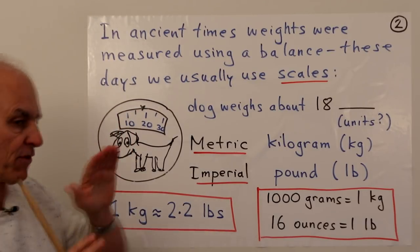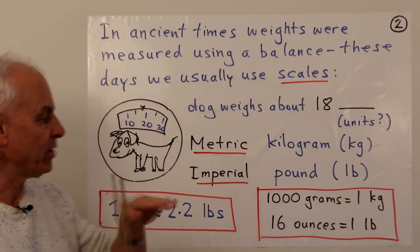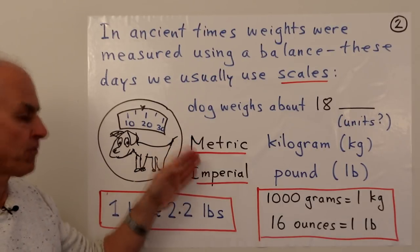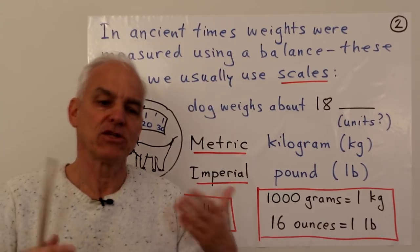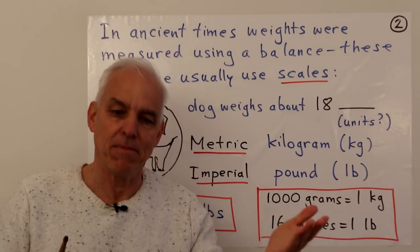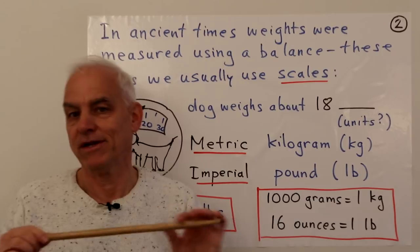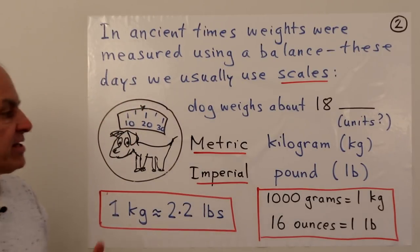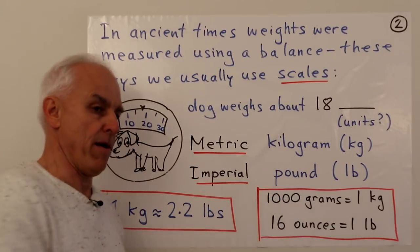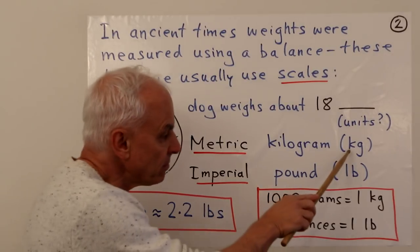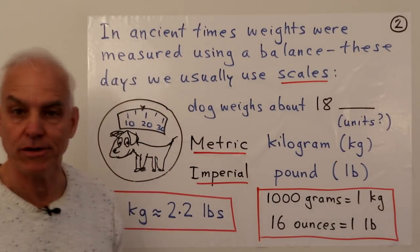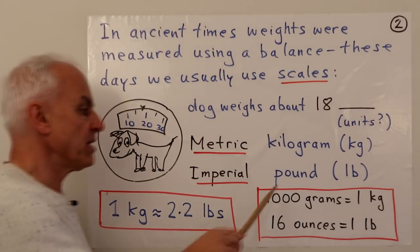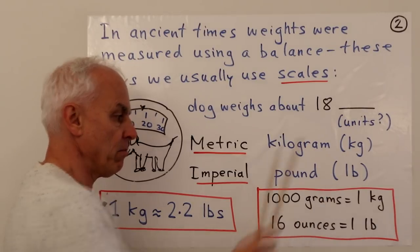These days, things have coalesced so we're only really using two systems around the world: the metric or the imperial. These correspond to the same divisions we discussed when talking about distances or lengths. In the metric system, the standard unit is the kilogram, abbreviated kg. In the imperial or British system, the standard unit is the pound, abbreviated lb.